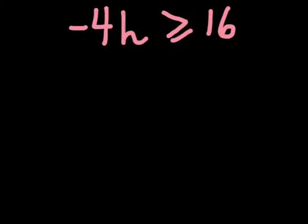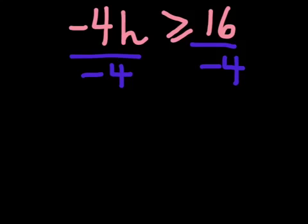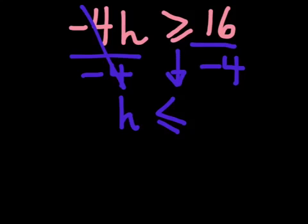For the next example, to get h by itself, divide both sides by −4. As soon as I know I'm dividing by a negative, the sign changes — it gets swapped around — so it's now actually less than or equal to negative 4.